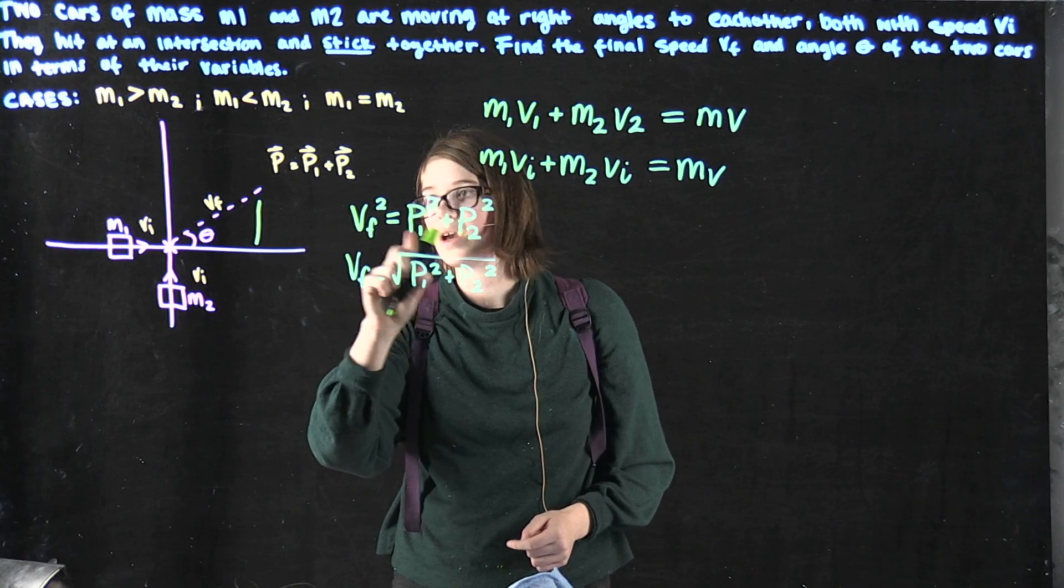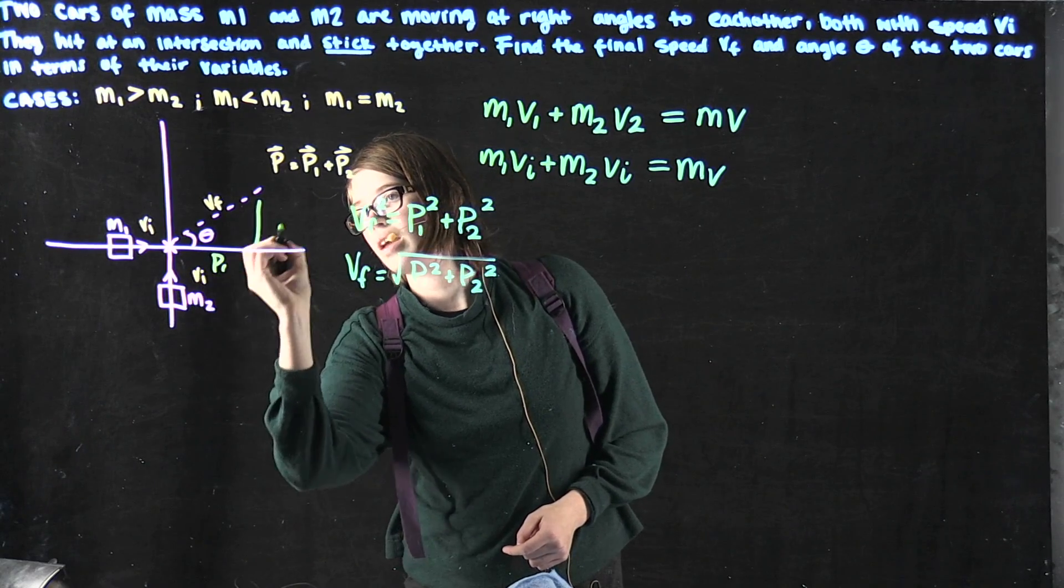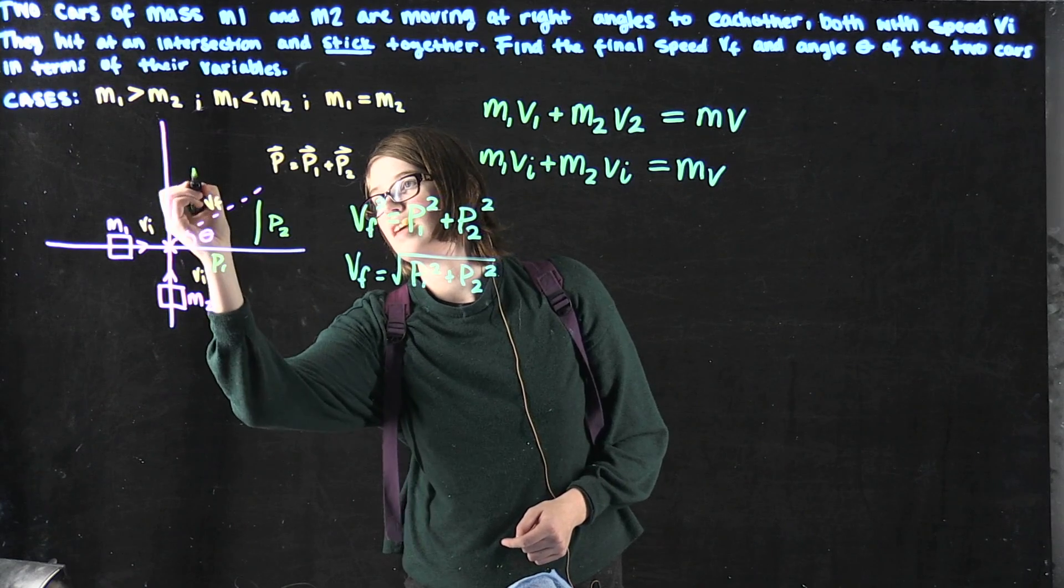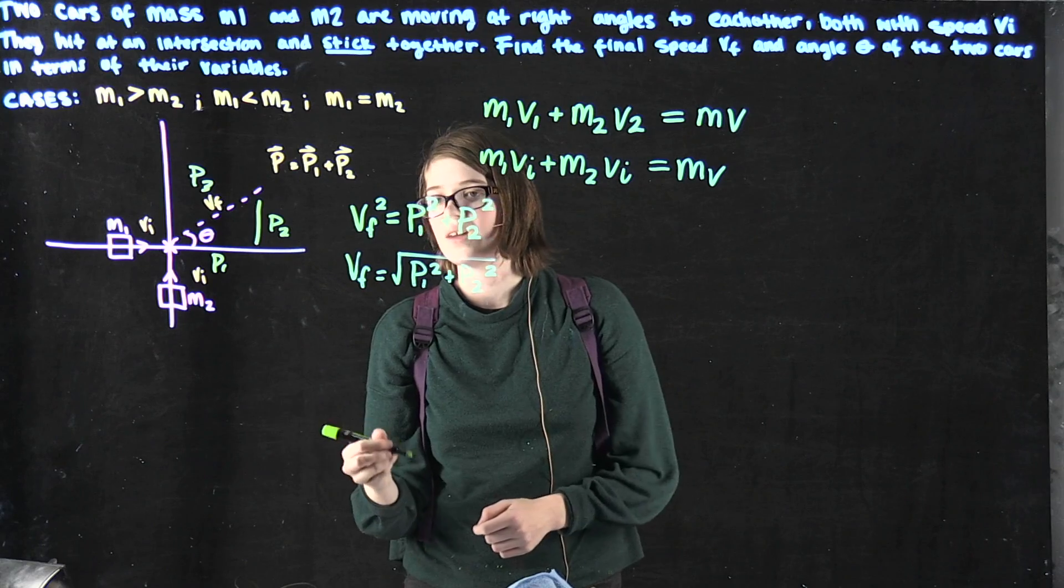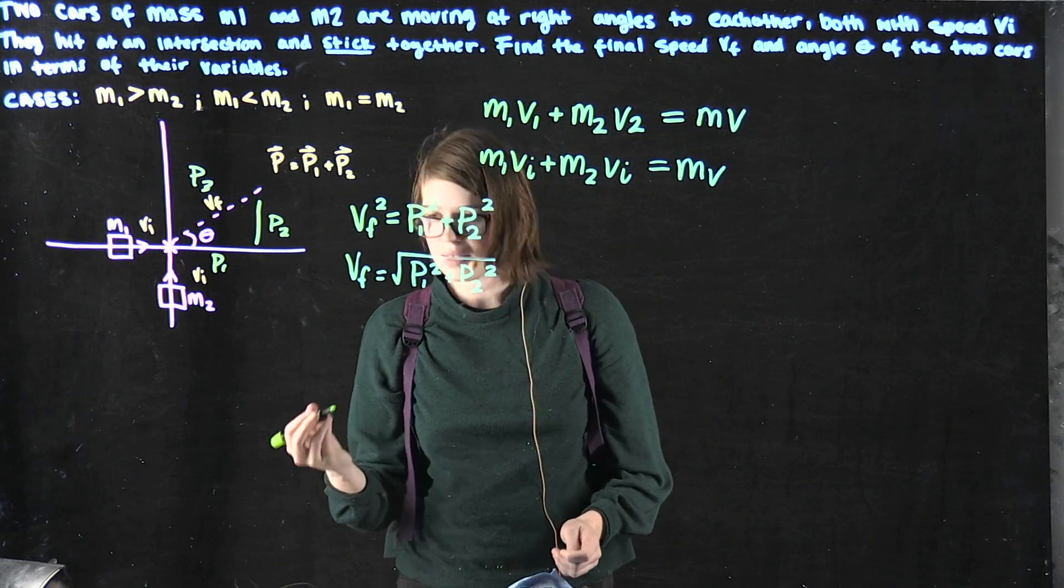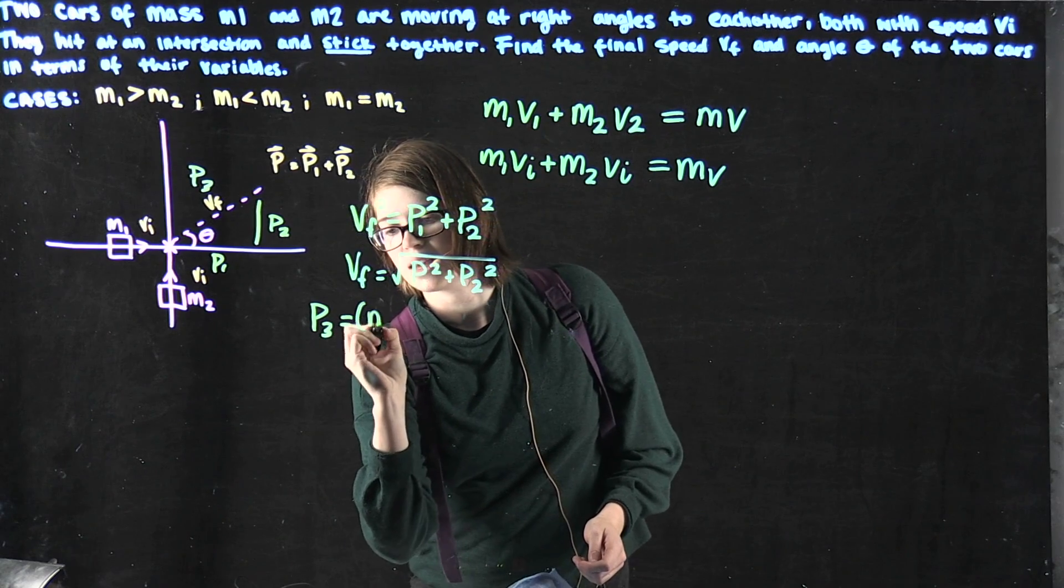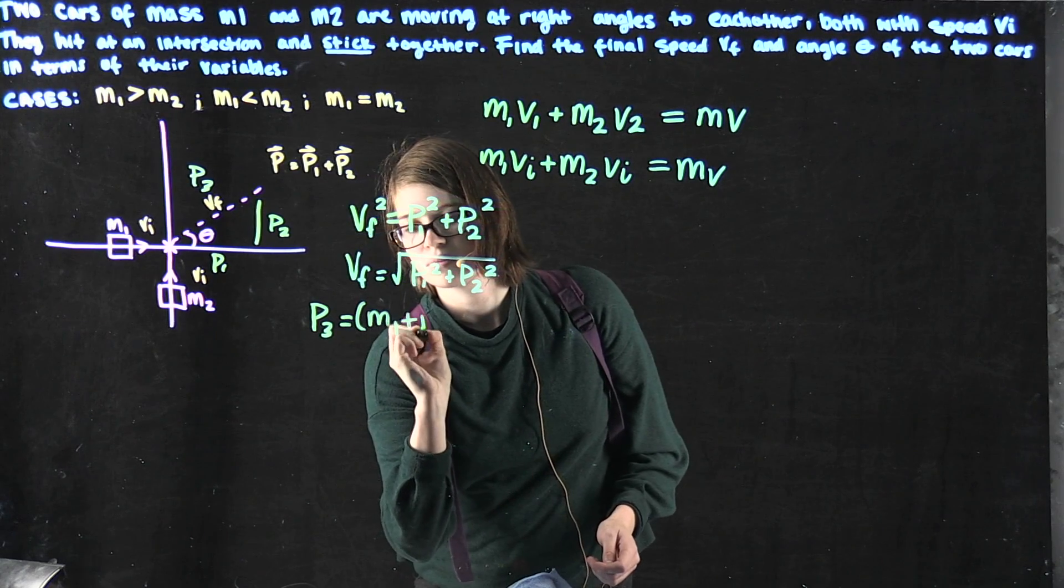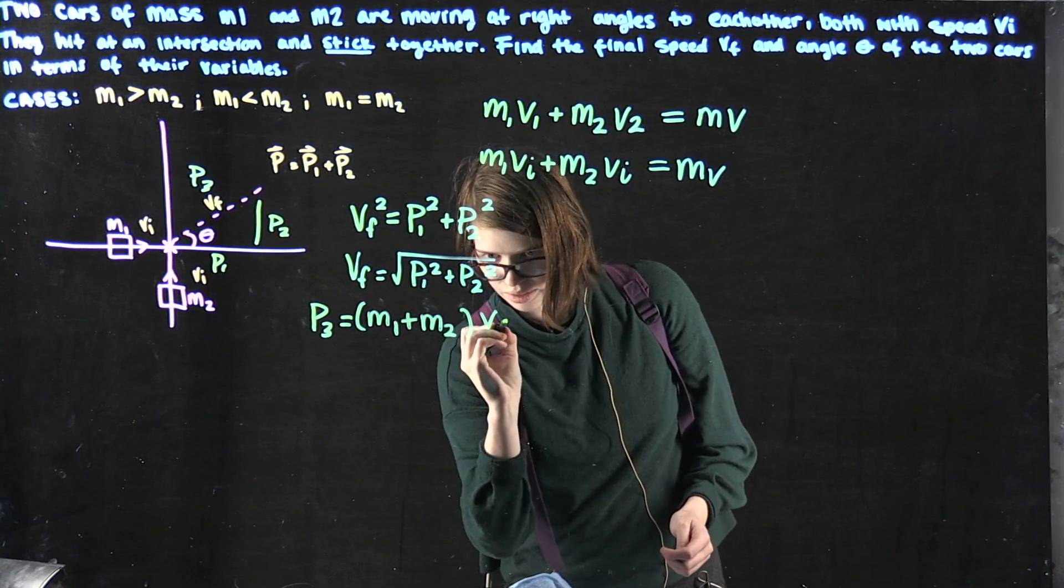Since we have p1 and p2, we can define this as p3. If we set it up in terms of the Pythagorean theorem, p3 ends up being equal to m1 plus m2 times the velocity final.